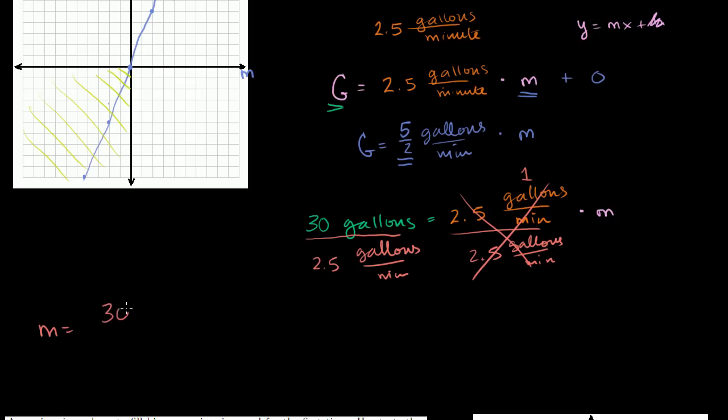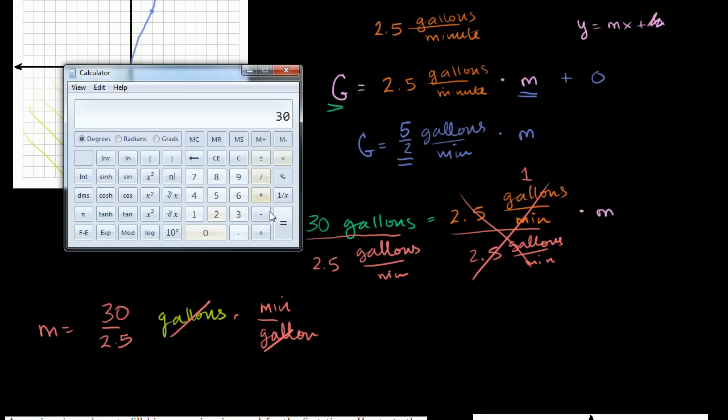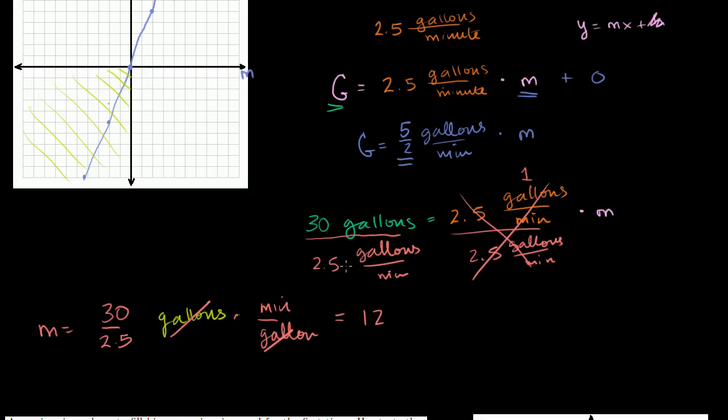So m is going to be equal to 30 divided by 2.5. You can deal with the units just like you would deal with actual numbers. If I have gallons per minute in the denominator, if I divide by this fraction, that's the same thing as multiplying by its inverse. The units cancel out. So I'm left with 30 divided by 2.5 minutes. And what is 30 divided by 2.5? 30 divided by 2.5 equals 12. So it'll take us 12 minutes to fill up a 30-gallon bathtub.